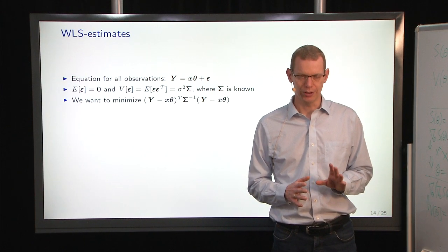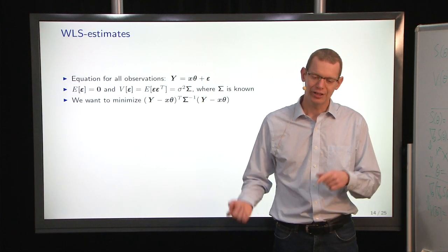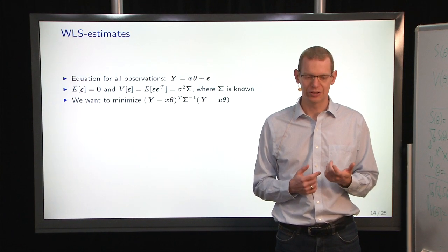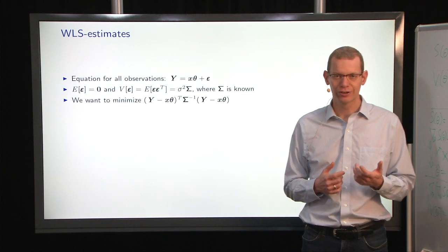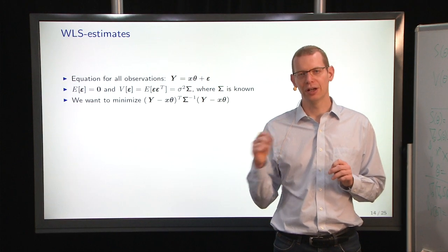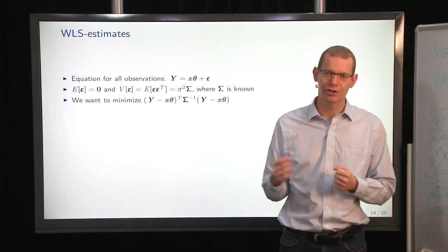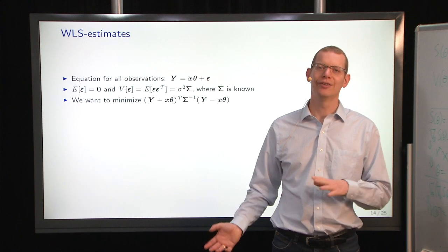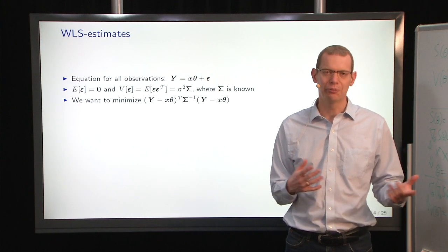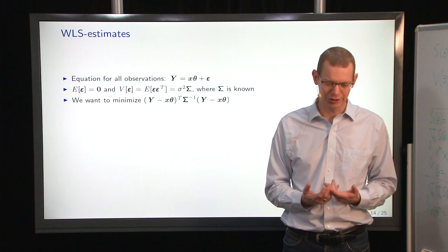So that was the ordinary least squares. The next step is to look at what's called weighted least squares because sometimes observations do not have the same variance. Sometimes observations are correlated. And then you'll see later on that you'll have problems with the ordinary least squares setting.